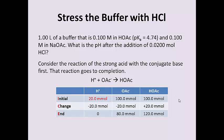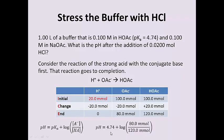The calculation of pH from this point is straightforward using the Henderson-Hasselbalch equation. I simply need to plug in the number of millimoles into the concentration terms, and when I calculate the pH, I get a pH of 4.56. Again, I can compare that to the pH of the buffer before I added any acid, which was 4.74. Notice that the pH has gone down just a little bit, which is consistent with adding a strong acid. Strong acid will cause the pH to decrease.